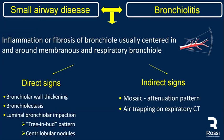Small airway disease or bronchiolitis is due to inflammation or fibrosis of the bronchioles, usually centered in and around the membranous and respiratory bronchi. We need to focus on indirect signs — patients with mosaic attenuation pattern that show air trapping on expiratory CTs. Direct signs of small airway disease include bronchial wall thickening, bronchiolectasis, luminal bronchial impaction, tree-in-bud, or centrilobular nodules.